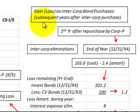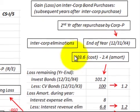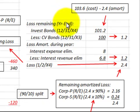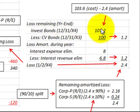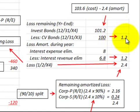Now let's look at how we'd handle this gain or loss on this intercorporate bond purchase for subsequent years, where Corporation P, the parent, purchased the bond issued by Corporation S, the subsidiary. Looking at the second year after the repurchase, the loss remaining at year end — 12/31/X4 — would put the investment in the bond at $101,200. That's based on the cost of $103,600 less two years of amortization of $2,400. The carrying value of the bond is $100,000, so the remaining loss on the bond is $1,200.